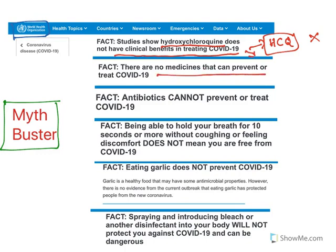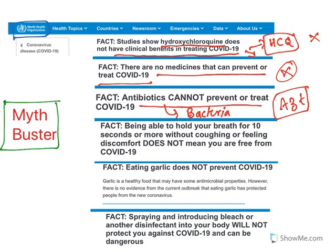Second: there are no medicines that can prevent or treat COVID-19, so you cannot take any medicine to treat or prevent it. Next: antibiotics cannot prevent or treat COVID-19. Antibiotics act against bacteria, and COVID is caused by a virus — you cannot kill a virus using an antibiotic. Most hospitals are using azithromycin, which is used to treat bacterial infections, but it cannot act on COVID. Next: being able to hold your breath for 10 or 15 seconds without coughing does not mean you are free from COVID-19. There are many WhatsApp messages claiming this, but it is a myth.